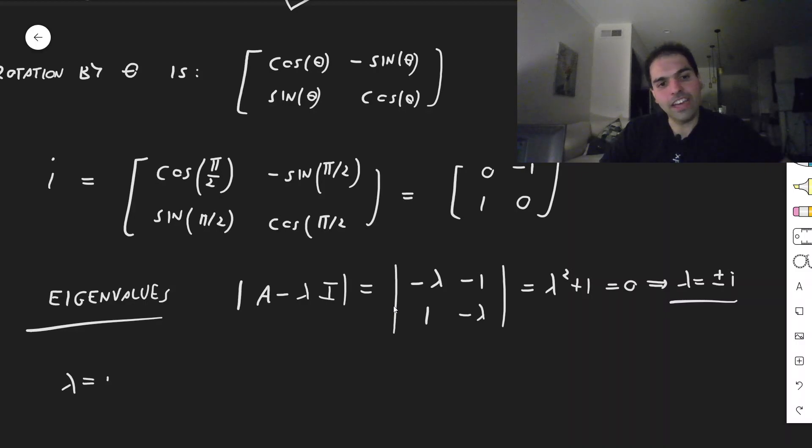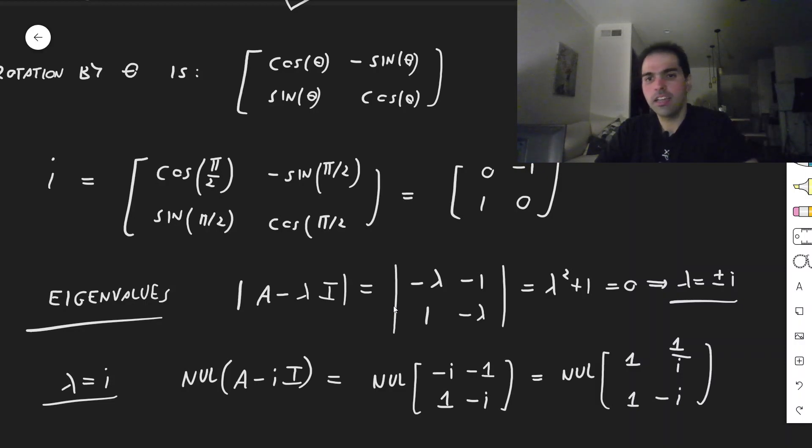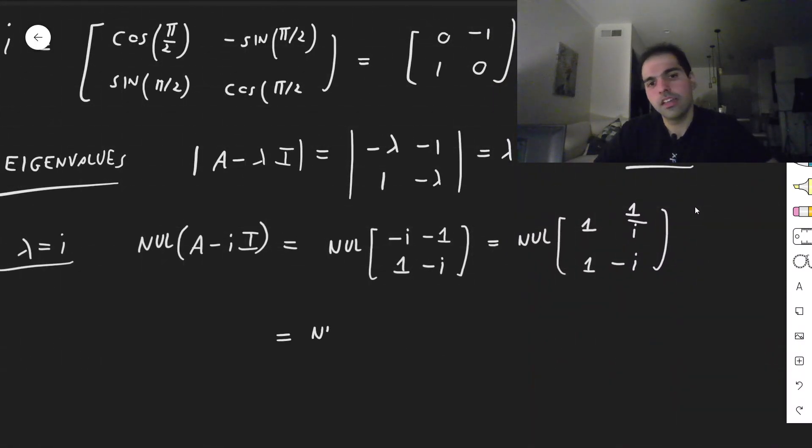And then for eigenvectors, for lambda equals i, let's find a null space of A minus i I. And that becomes a null space of minus i, minus 1, 1, and minus i. And then just divide. So null space of, I think, 1, and then minus 1 over minus i, so 1 over i, and then 1 and minus i. And then if you just multiply top and bottom by i, you actually get the same thing. So null space of 1 minus i, 1 minus i.